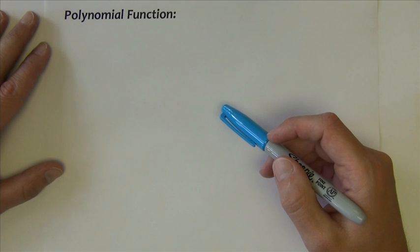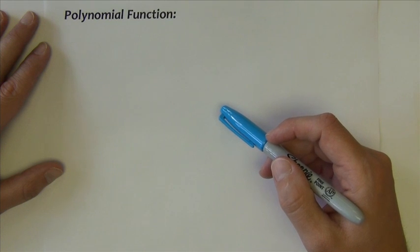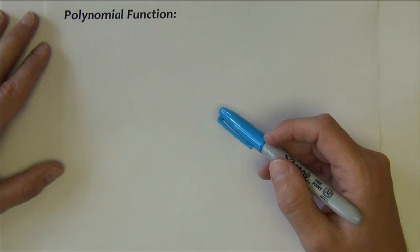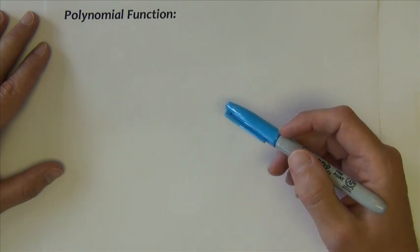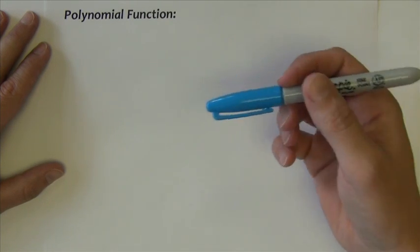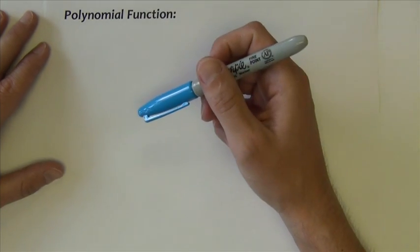Both linear and quadratic functions are specific types of a more general function called a polynomial function. So let's begin by defining what a polynomial function is.